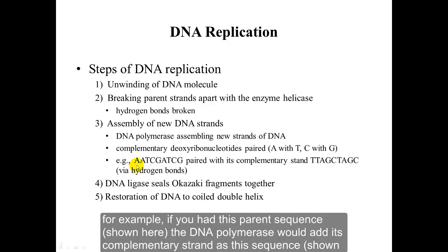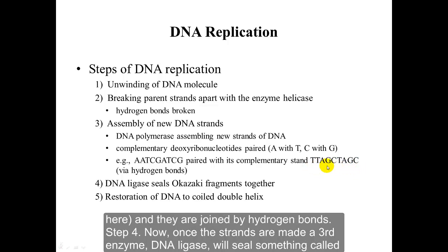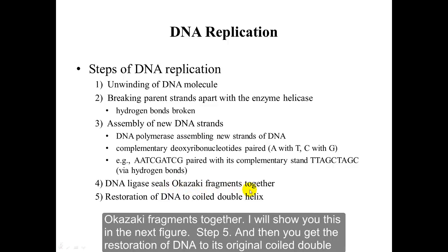For example, given a parent sequence, DNA polymerase would add its complementary strand, and these are joined by hydrogen bonds. Once these strands are made, a third enzyme — DNA ligase — will seal something called Okazaki fragments together. Then you get the restoration of DNA to its original coiled double helix.